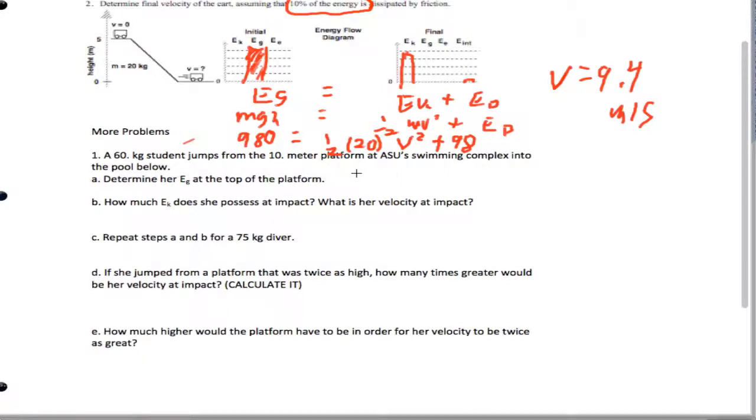Problem one, determine EG at the top of the platform for this diver. So we're going to have EG equals MGH, which is 60 times 9.8 times 10. And we're going to end up getting 5,880 joules of energy. How much EK does she have at the end? Well, energy is conserved and there's nothing dissipated, so it's still going to be 5,880 joules.